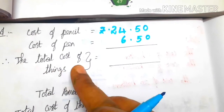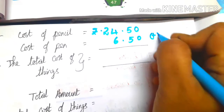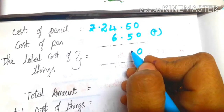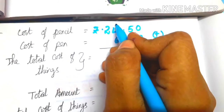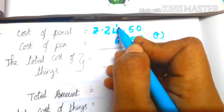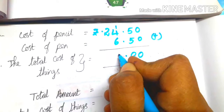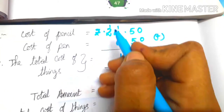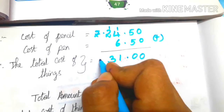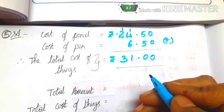Therefore the total cost of things equals: add the numbers. 0 plus 0 is 0. 5 plus 5 is 10, write 0 carry 1. 4 plus 1 is 5, 5 plus 6 is 11, write 1 carry 1. 2 plus 1 is 3. So 31 rupees is the total cost of things.